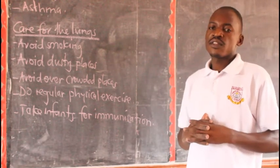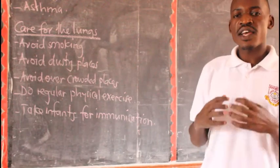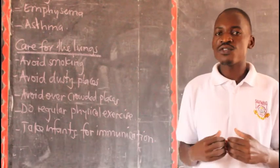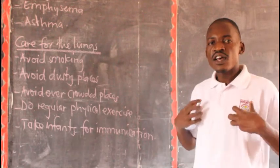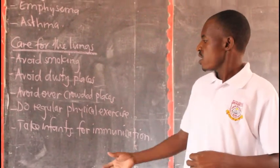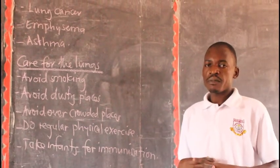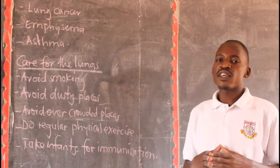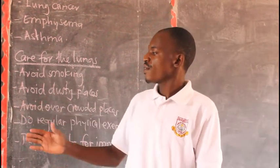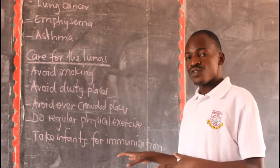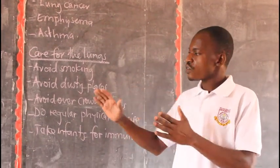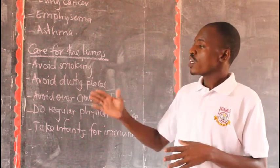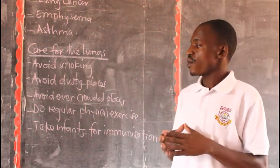Do regular physical exercise. Physical exercise is very important and very helpful for our bodies. Without physical exercise, some of our body organs may not function well, so we are supposed to do more physical exercise on a regular basis so that your lungs can carry out their function properly. Then, take infants for immunization. When we talk about infants, we mean young children under five years. We are supposed to take them for immunization to avoid diseases like tuberculosis, diphtheria, and whooping cough. When we immunize them, they may not suffer from those diseases.